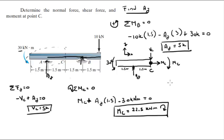And last but not least is the normal force, which again is pretty obvious. Sum of the forces in the X is equal to zero. The only force in the X is NC, so NC is equal to zero. So NC is the normal, VC is the shear, and MC is the moment at C. Final answers.